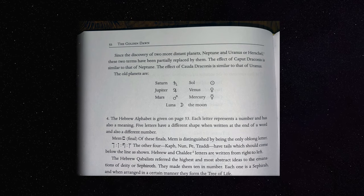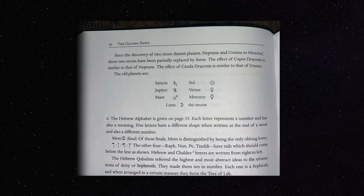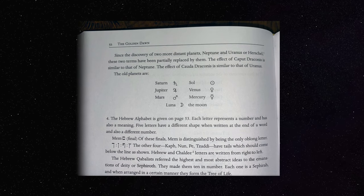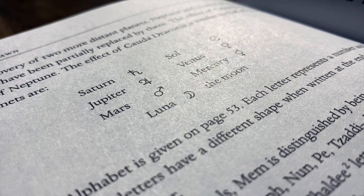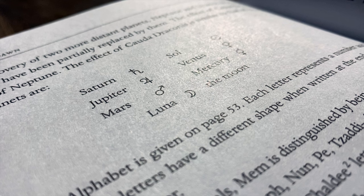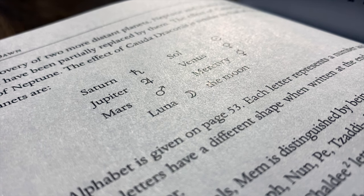The effect of Caput Draconis is similar to that of Neptune. The effect of Cauda Draconis is similar to that of Uranus. The old planets are Saturn, Jupiter, Mars, Sol, Venus, Mercury, Luna, the moon.